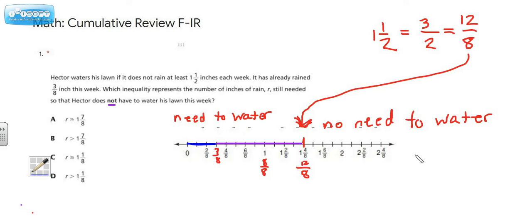If this was just a regular equation, we would say three-eighths plus some amount of rain, and then I'm just going to put a question mark so that we can think again about which of these inequality symbols we want, would have to be at least twelve-eighths.